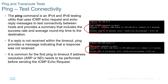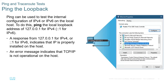Ping is very useful — if you haven't used it much, you need to practice with it. Ping the loopback: Ping can be used to test the internal configuration of IPv4 or IPv6 on the local host by pinging the loopback address 127.0.0.1 for IPv4 or ::1 for IPv6. A response indicates that IP is properly installed on the host; an error message indicates TCP/IP is not operational. When you ping your local host, you're just making sure your TCP/IP stack works.